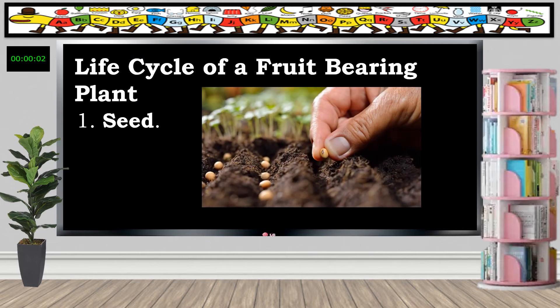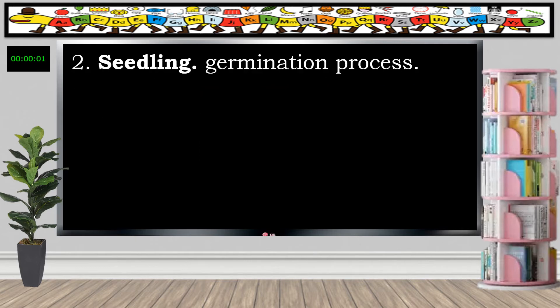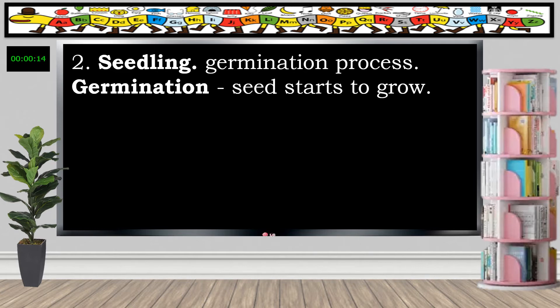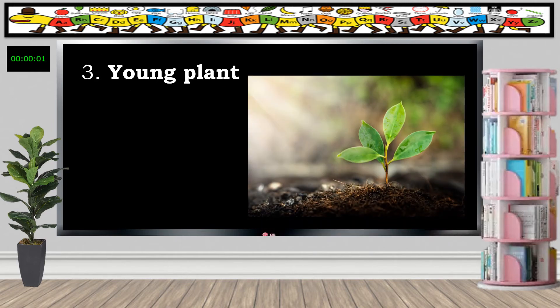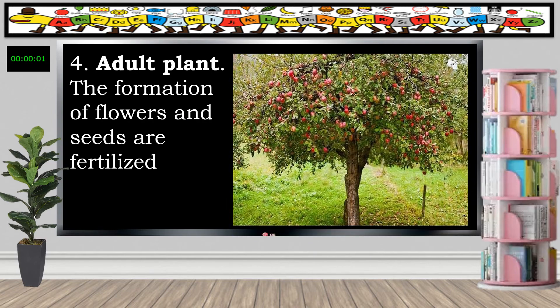Now let's learn about the life cycle of a fruit-bearing plant. The first stage is the seed. As we plant the seed, it will become a seedling — that is the second stage. During this stage, germination takes place, where the seed starts to grow. The third stage is the young plant, and the last stage is the adult plant, in which the formation of flowers and seeds are fertilized. This is also called the pollination process.